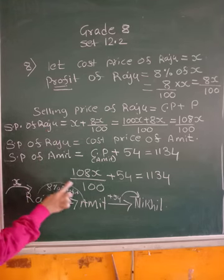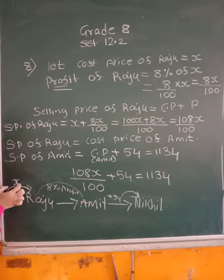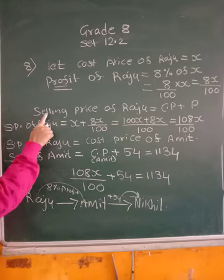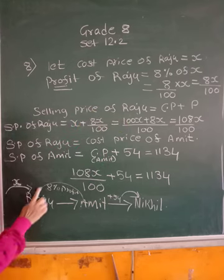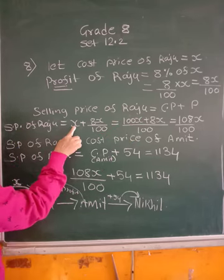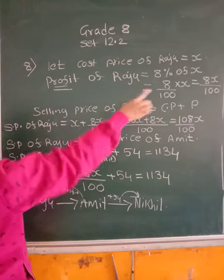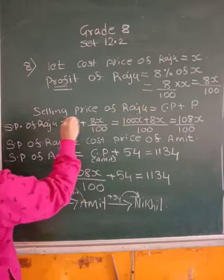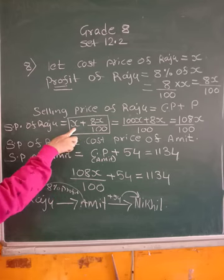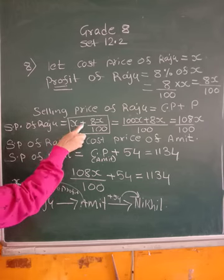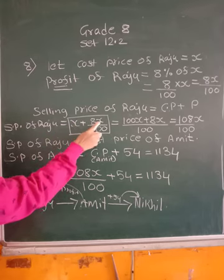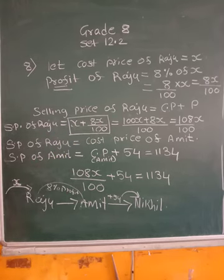So Raju is going to sell it to Amit. So his cost price plus profit will give Amit's cost price or his selling price. So what I have written? Selling price of Raju is his cost price, that is X plus profit, it is 8%, that is 8X upon 100. Cost price plus profit will give selling price. So he has sold this to Amit for X plus 8X upon 100 rupees.